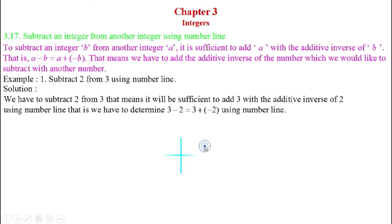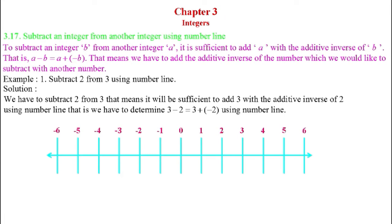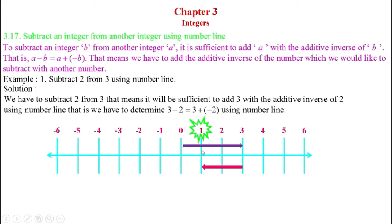This can be represented on the number line. The first number is 3, so we approach three steps to the right of 0 because 3 is positive. We reach the point 3. The second number is minus 2, which is negative, so we go two steps to the left of 3 and reach the point 1. So 1 is the result — subtracting 2 from 3 gives us 1.